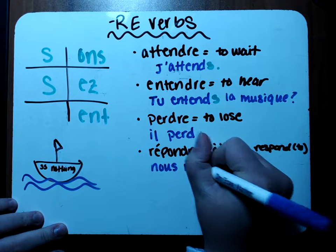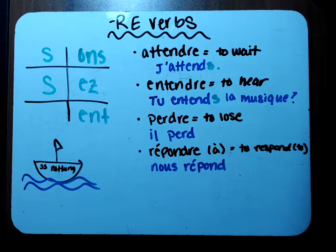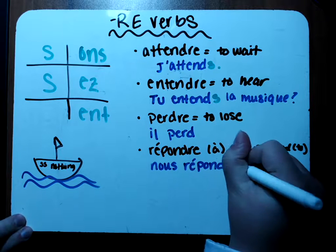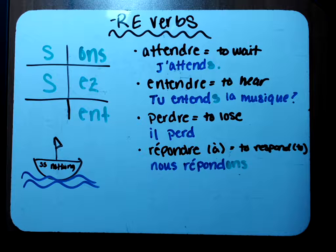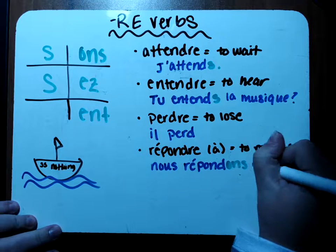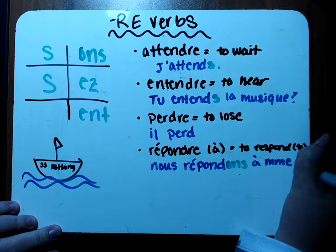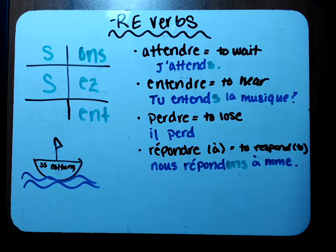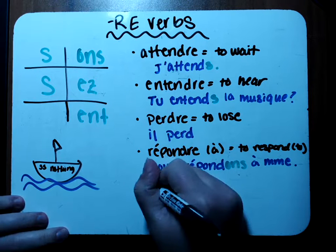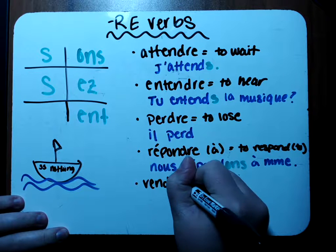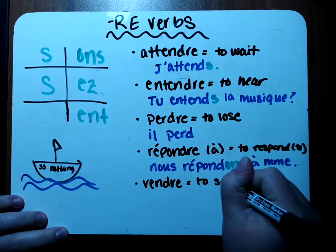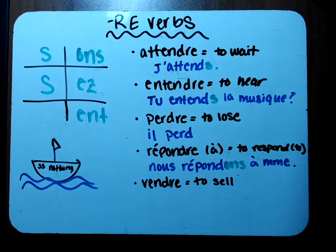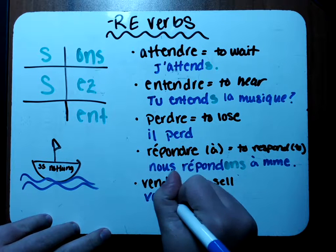Fifth verb — 'vendre,' which means to sell. If you're trying to sell something online you'd use vendre. Let's conjugate it and say that y'all sell. Like y'all sell books — so: vous. Take off the RE, write your stem: vend. Add on the ending EZ. Vous vendez — or: vous vendez un livre.